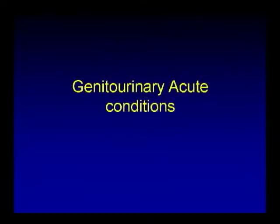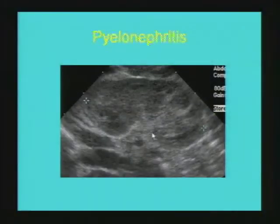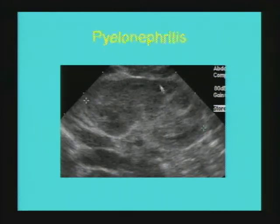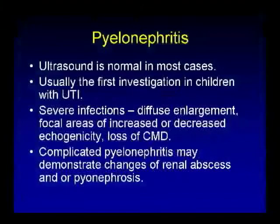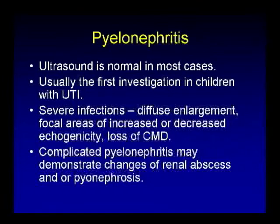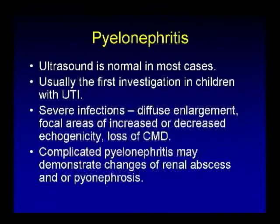Moving forward to acute genitourinary conditions. Starting with a longitudinal sonogram of the kidney showing changes of pyelonephritis: ill-defined hypoechoic and interspersed echogenic areas within the renal parenchyma with complete loss of corticomedullary differentiation. Ultrasound is typically the first investigation in children presenting with urinary tract infection. In an established case of pyelonephritis, imaging is not usually warranted unless looking for complications like pyonephrosis or renal abscess, for which CT scan is much more sensitive.